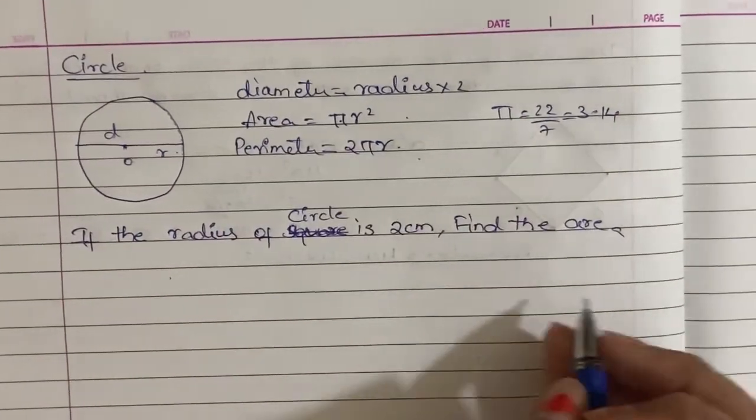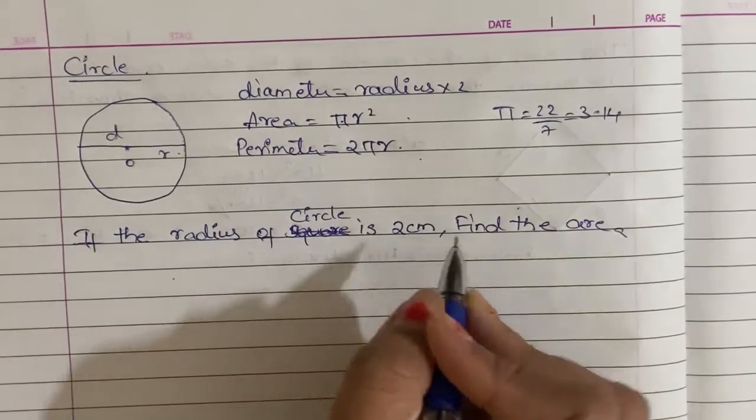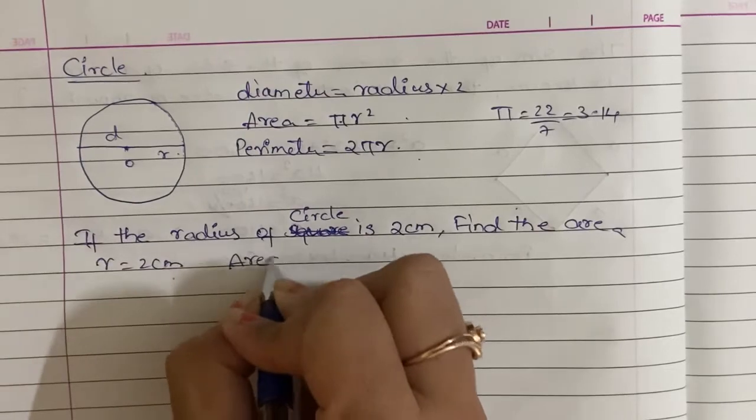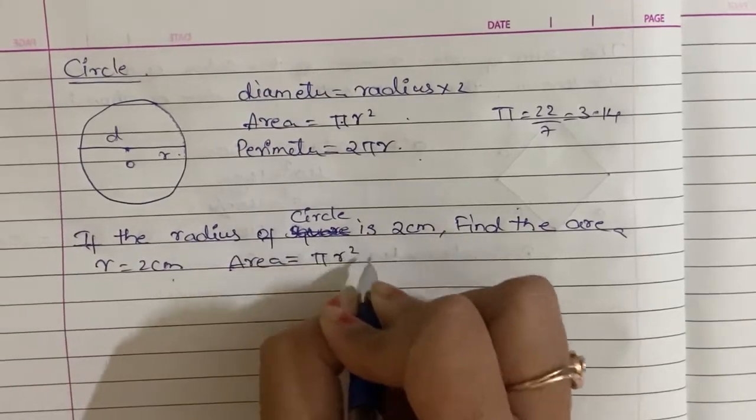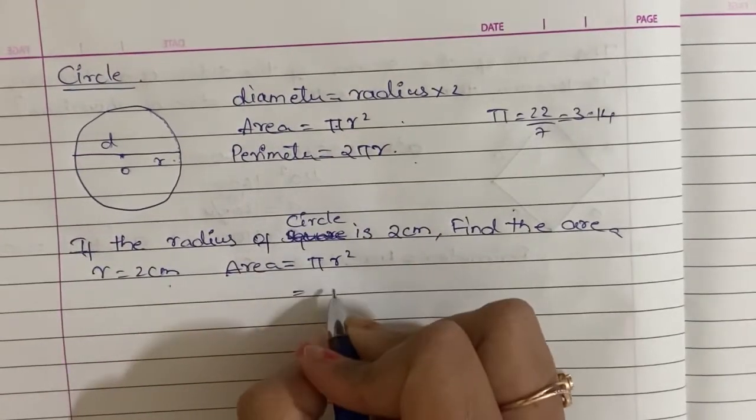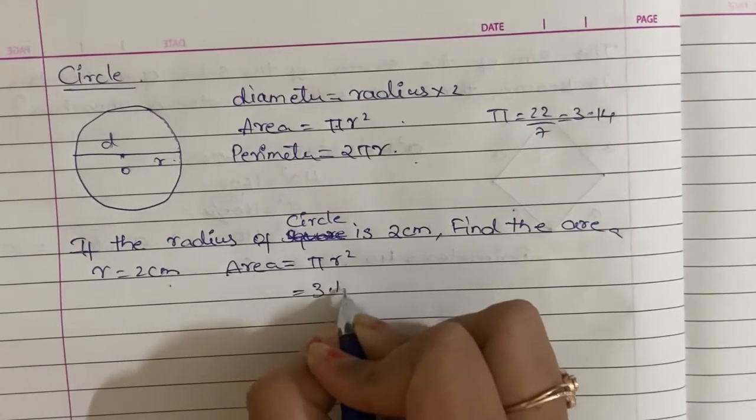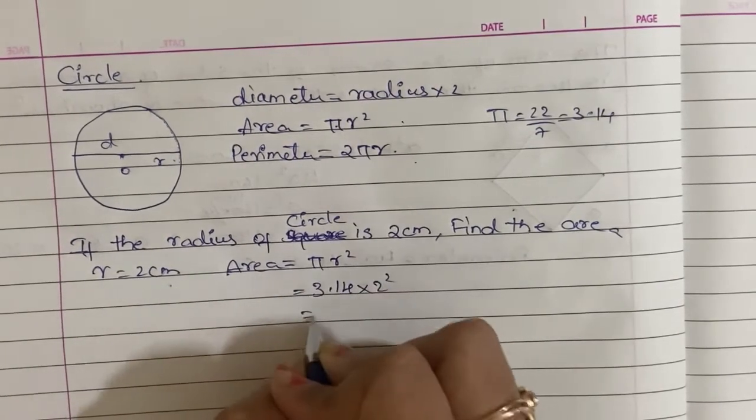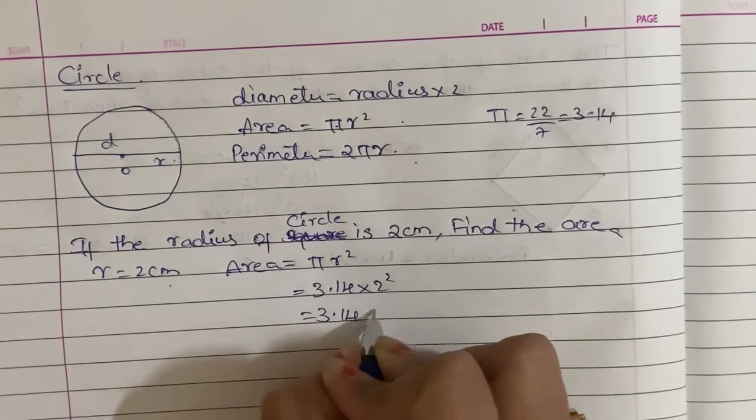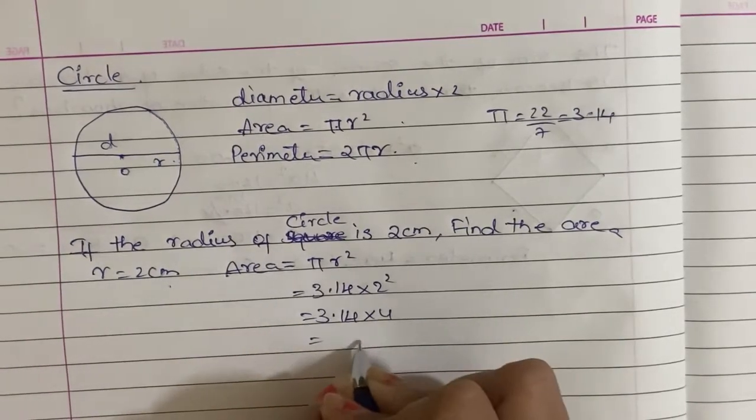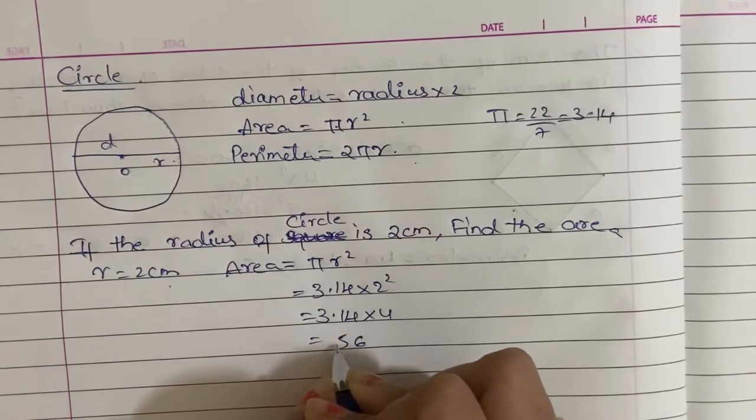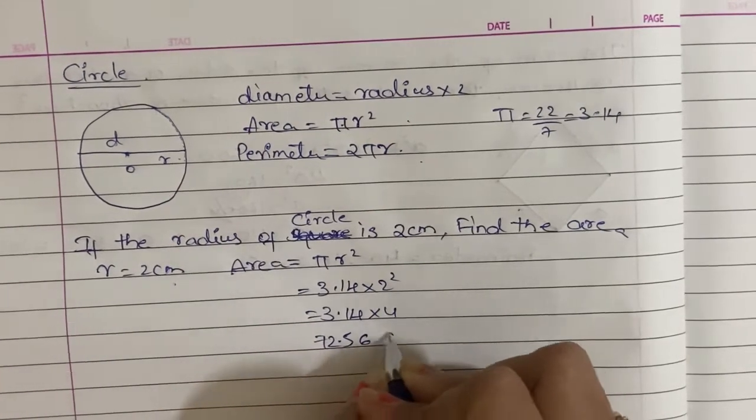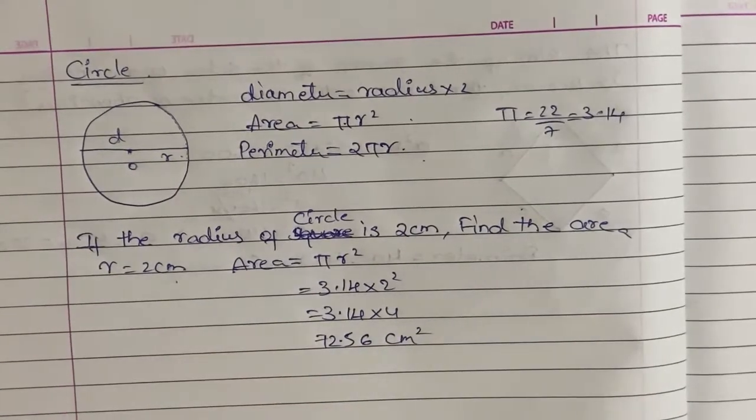If the radius of the circle is 2 centimeters, find the area. Radius is 2 centimeters. Area is equal to pi r square. Pi is equal to 3.14, r square is equal to 2 into square. So this is 3.14 into 4, and it is 12.56 centimeters square is the area of the circle.